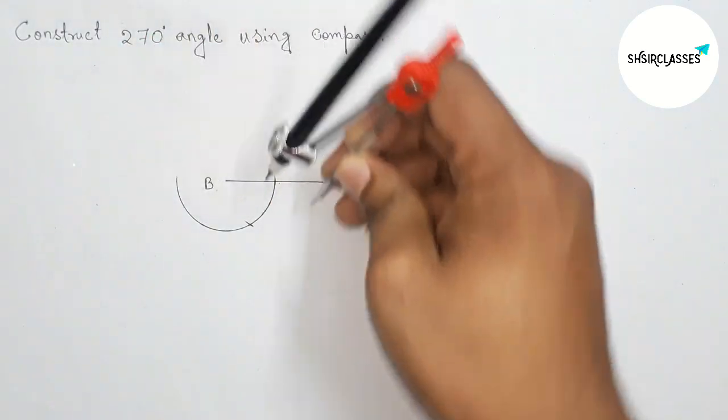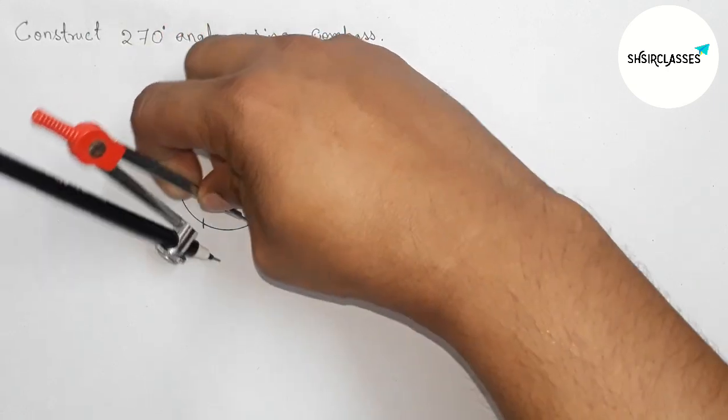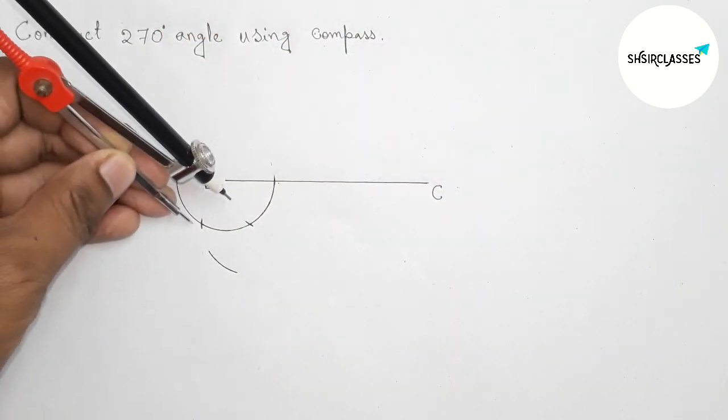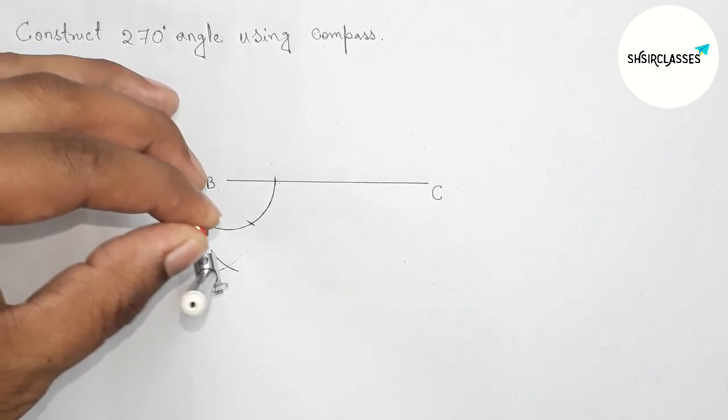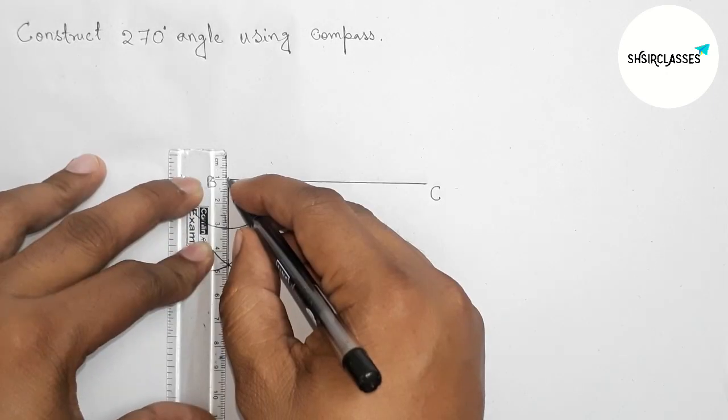and cut here with the same length. Put the compass here and cut here, drawing an arc here again with the same length. Put the compass here and cut here. Now, join this line to get a 90